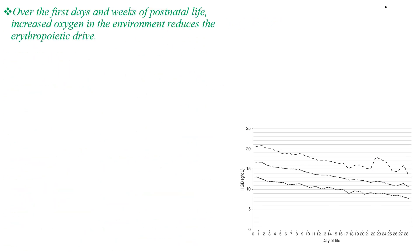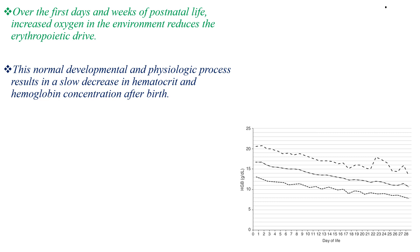Over the first days and weeks of postnatal life, increased oxygen in the environment reduces the erythropoietic drive. Because the baby starts to breathe atmospheric air, there is an increased amount of oxygen which reaches the tissue level. This causes decreased or reduced erythropoietic drive and decreased erythropoietic production. This normal developmental and physiologic process results in a slow decrease in hematocrit and hemoglobin concentration after birth.